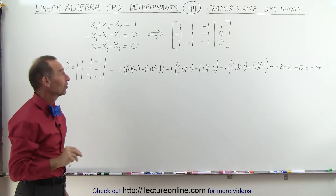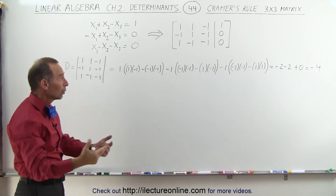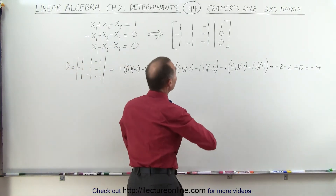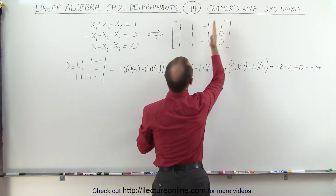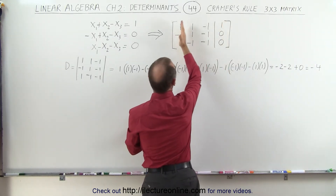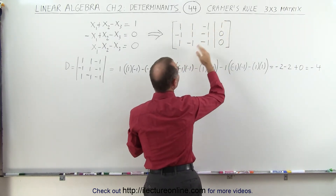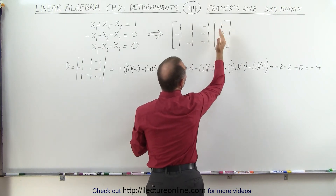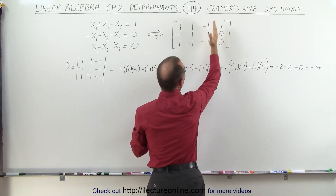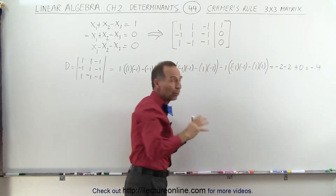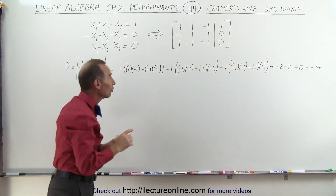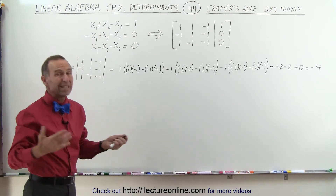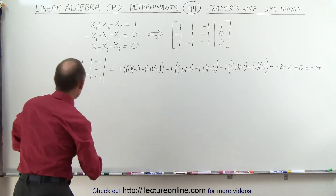Now we need three more matrices, and we're going to find the determinant of each. We'll take the three constants and replace the first column with them — then do this again for the second column, then the third column. We'll call them matrix 1 (M1), matrix 2 (M2), and matrix 3 (M3).